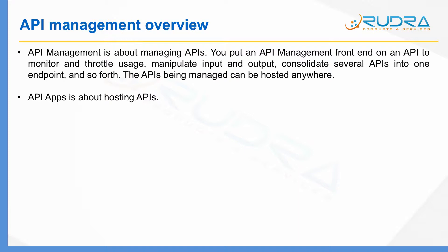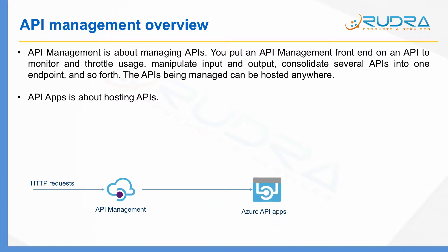The APIs managed by API management don't need to be hosted on Azure itself — they can be hosted on-premises or somewhere else. When comparing API management and API apps: API apps is about hosting APIs, whereas API management is about managing APIs. At a high level, when an HTTP or HTTPS request comes in, it goes to API management, which then forwards it to either Azure API apps, on-premises, or somewhere else based on the location of the API.